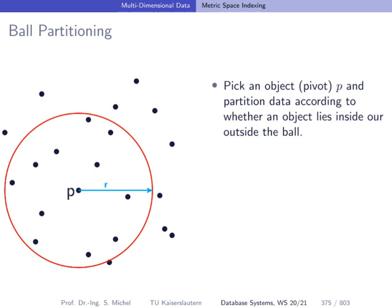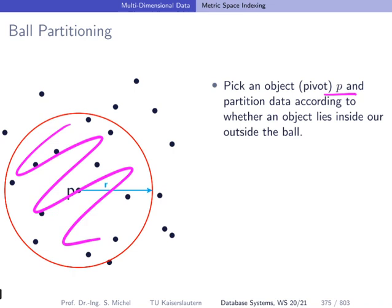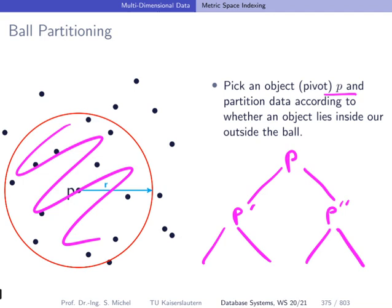The next approach is called ball partitioning. Here again, we pick a pivot from the given points we want to partition. Then, given a radius parameter r, we assign the points inside this ball to the left child node of a tree, and those outside to the right subtree. That means in the tree, a node contains the pivot, and then one subtree contains everything inside the ball, and the other subtree contains everything outside the ball. Doing this recursively with another pivot creates again a binary tree.